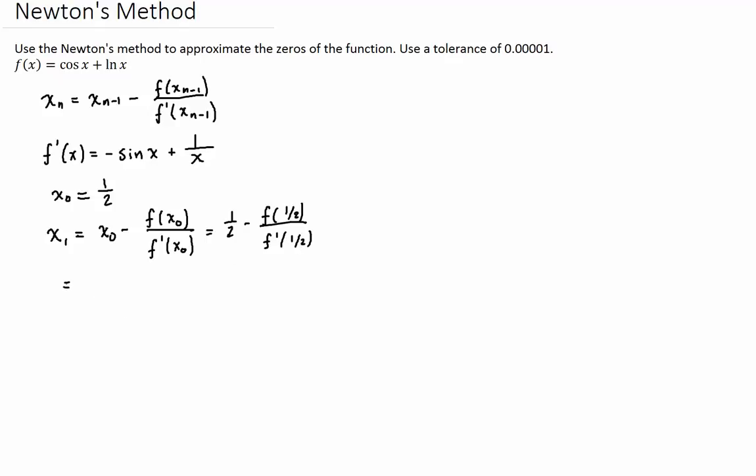And that is equal, and it would be one half minus, and you plug it in. So cosine of one half plus natural log of one half divided by negative sine of one half plus one over one half, or plus two. And we would plug this in a calculator. The one thing you have to be careful is to keep your calculator in radians, so that these numbers, the cosine, the angle is calculated in radians, and then you get the right answer.